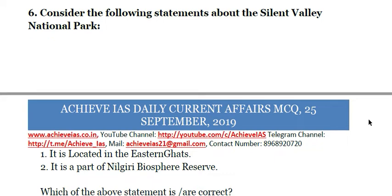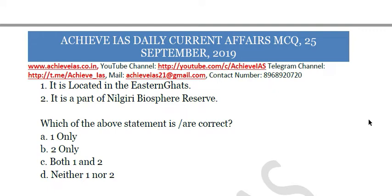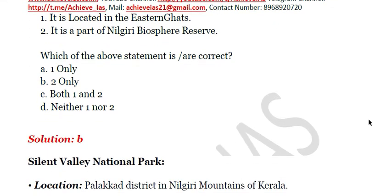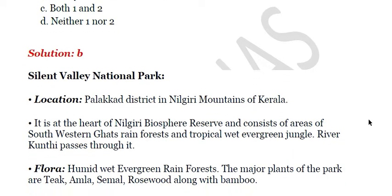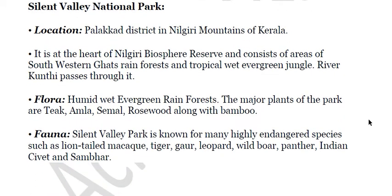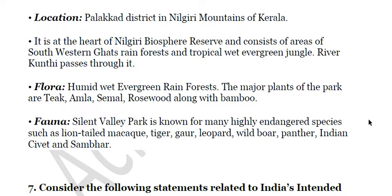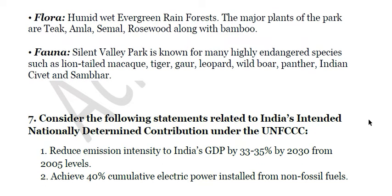Question six: consider the following statements about Silent Valley National Park. First, it is located in the eastern part. Second, it is a part of the Nilgiri Biosphere Reserve. The correct answer is B — only the second statement. Silent Valley National Park is located in Palakkad district in the Nilgiri mountains of Kerala, at the heart of the Nilgiri Biosphere Reserve. It consists of southwestern ghats rainforest and tropical wet evergreen jungle. Flora includes teak, amla, semel, rosewood, and bamboo. Fauna includes the lion-tailed macaque, tiger, gaur, leopard, wild wolf, panther, Indian civet, and sambar.